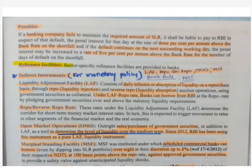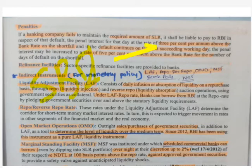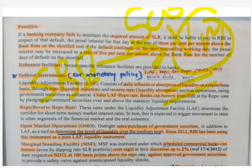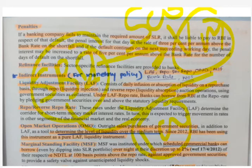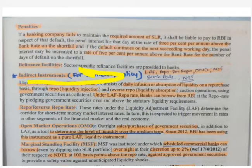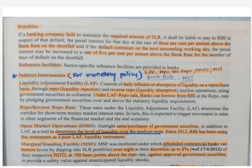What is the refinance facility of the RBI? Refinance means: suppose your bank (SBI) has given a loan of 500 crores to a borrower, and the borrower is not able to run their business, SBI may lend an additional 100 crores to help them repay — that is called refinance. RBI also provides this refinance facility: RBI finances to banks so that banks can lend money to the respective borrowers. The direct instruments are CRR, SLR, and refinance.